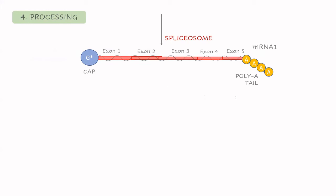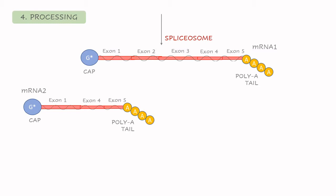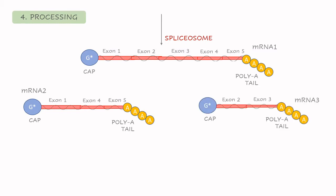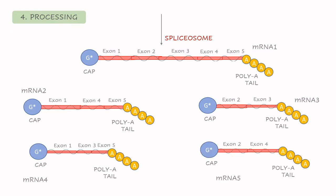At the end we only get the information we really need: all the exons with the poly-A tail and the cap. This is already the messenger RNA. However, sometimes not all exons are included — there can be two, three, or many more combinations, each creating its own messenger RNA encoding a different protein. So at the end we have a pool of a variety of RNA messengers.